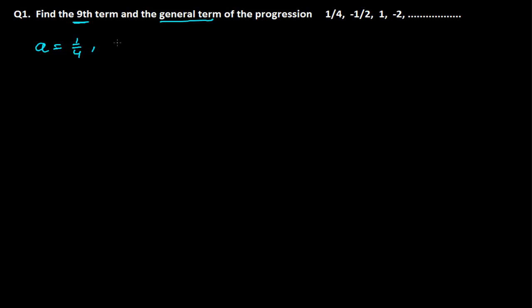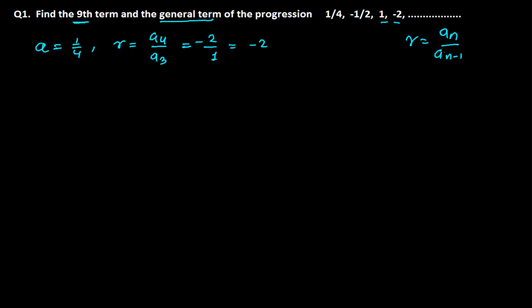My first term is 1/4. For the common ratio, I'll use the fourth term over the third term since those are easiest — that gives us -2 over 1, so the common ratio is -2. You can take any succeeding term over its preceding term; the common ratio is the nth term divided by the (n-1)th term.